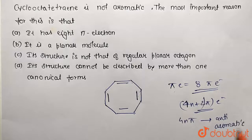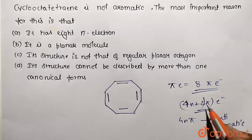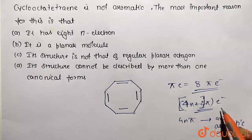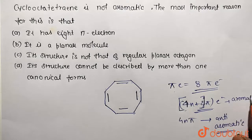If it is 4n+2 pi electron system, then it is called aromatic. Aromatic in nature.